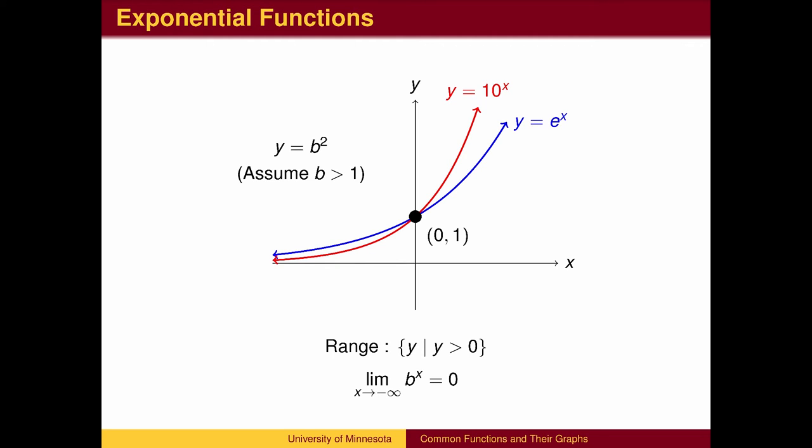Exponential functions stay above the x-axis; that is, their range is strictly positive. They all pass through the point (0, 1) and approach the x-axis asymptotically to the left. The larger the base, the longer the graph stays close to the x-axis for negative values of x, and the steeper the graph climbs to the right.